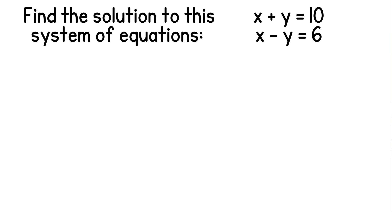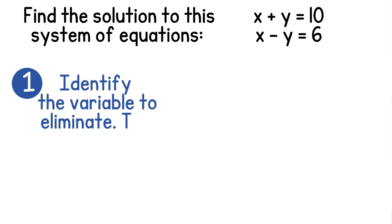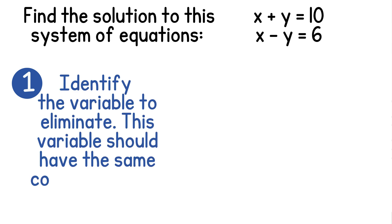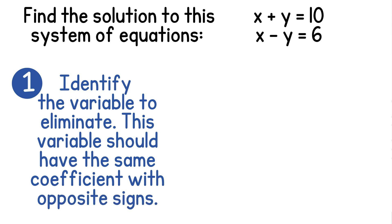Let's try the elimination method on this example with the system of equations where x plus y equals 10 and x minus y equals 6. Our first step is to identify the variable that we want to eliminate. This variable should have the same coefficients but with opposite signs. The coefficients of y are positive 1 and negative 1, so we'll eliminate the y variables since they have the same coefficients but are opposites.